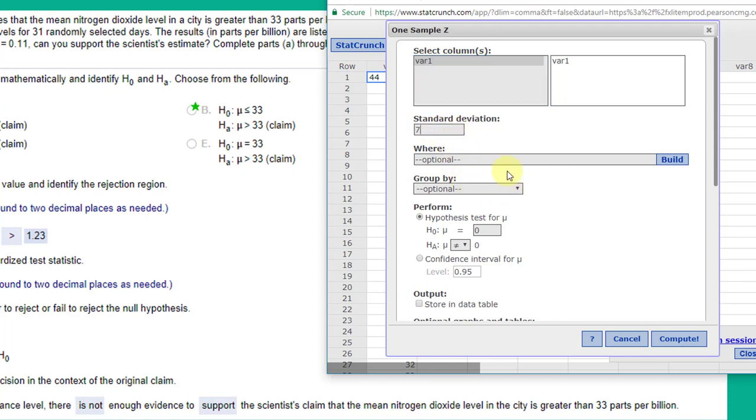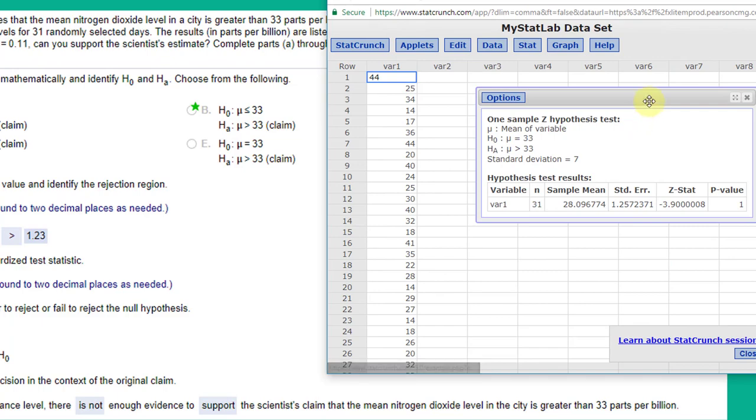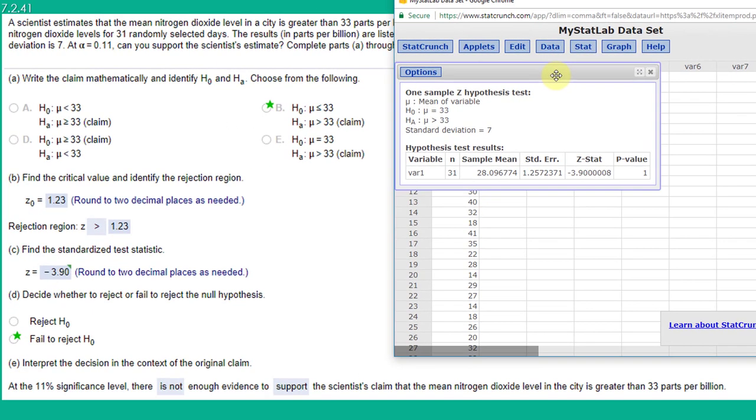We don't have to worry about grouping. We want to perform hypothesis tests. The assumed mean was 33. Our alternative contains the greater than symbol, and really we can ignore the rest. We're just going to click on Compute, and we get our results here.